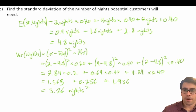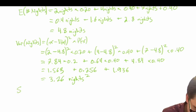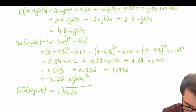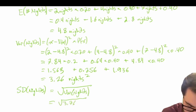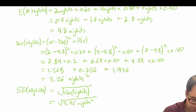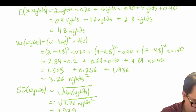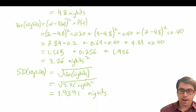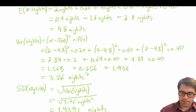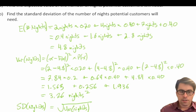Now we need to calculate our standard deviation of nights, which is equal to the square root of the variance of nights. That is the square root of 3.76 nights squared, and taking the square root of 3.76 we arrive at 1.9391 nights. The square root of nights squared is simply equal to nights. So we've calculated our standard deviation to be 1.9391 nights, our variance to be 3.76 nights squared, and our expected value to be 4.8 nights.